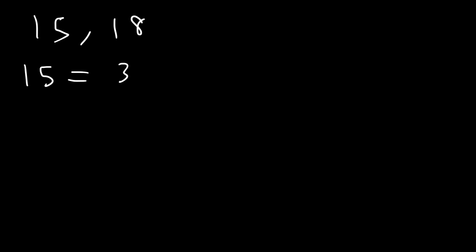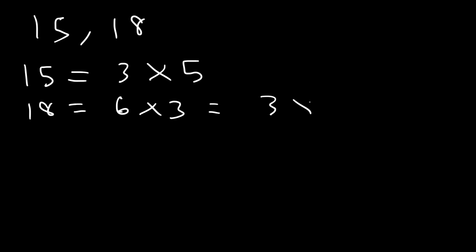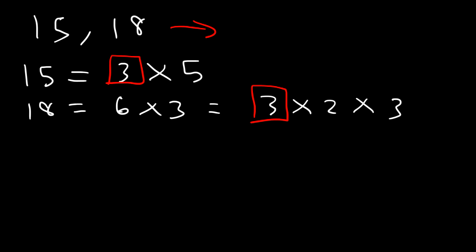So, do the same thing for 15 and 18. Write the prime factorization, and then identify the GCF. 15 is simply 3 times 5 — we can't break it down any further than that. 18 is 6 times 3, and 6 is 3 times 2, and then we still have the other 3. So, 3 is the only common factor in 18 and 15. It's the greatest common factor, and the answer is 3.